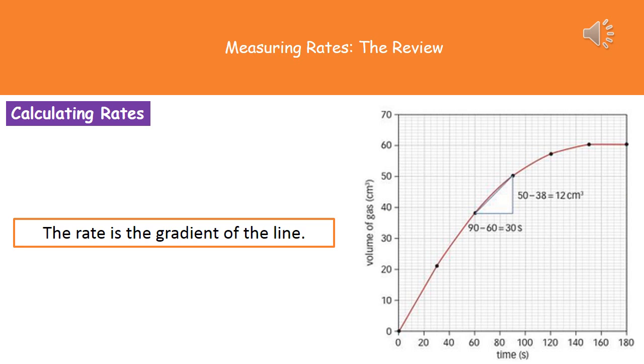What they might also ask you to do is to actually calculate the rate of the reaction from this graph of time and volume. Now, it's quite simple. All we need to do is to work out the gradient of our line. So as you can see on the graph on the right-hand side there, the way we do this is we're going to have a little triangle drawn underneath our line.